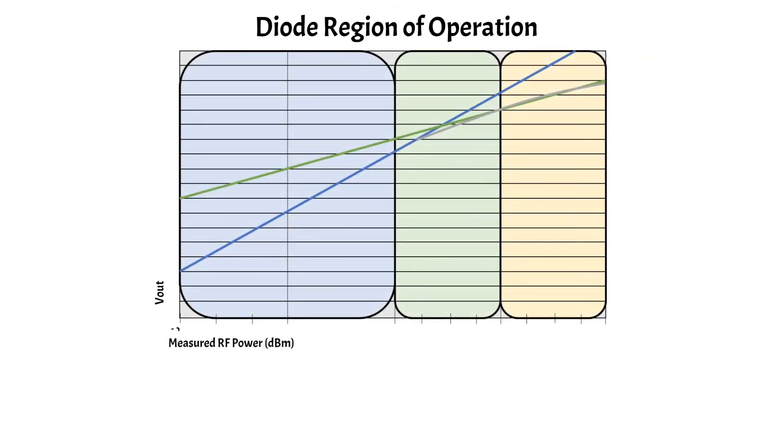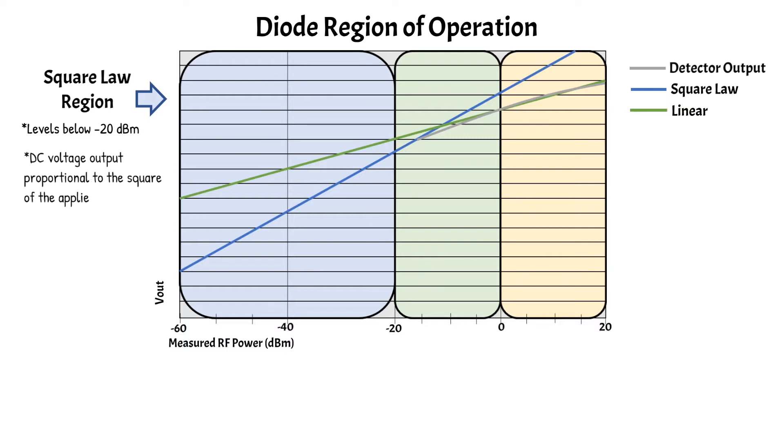The relation of the DC voltage to the power measured is dependent on the diode region of operation, which is typically separated into three sections. The square law region occurs at levels below about negative 20 dBm, where the diodes produce a DC voltage output that is closely proportional to the square of the applied RF voltage. This region is also modulation independent.